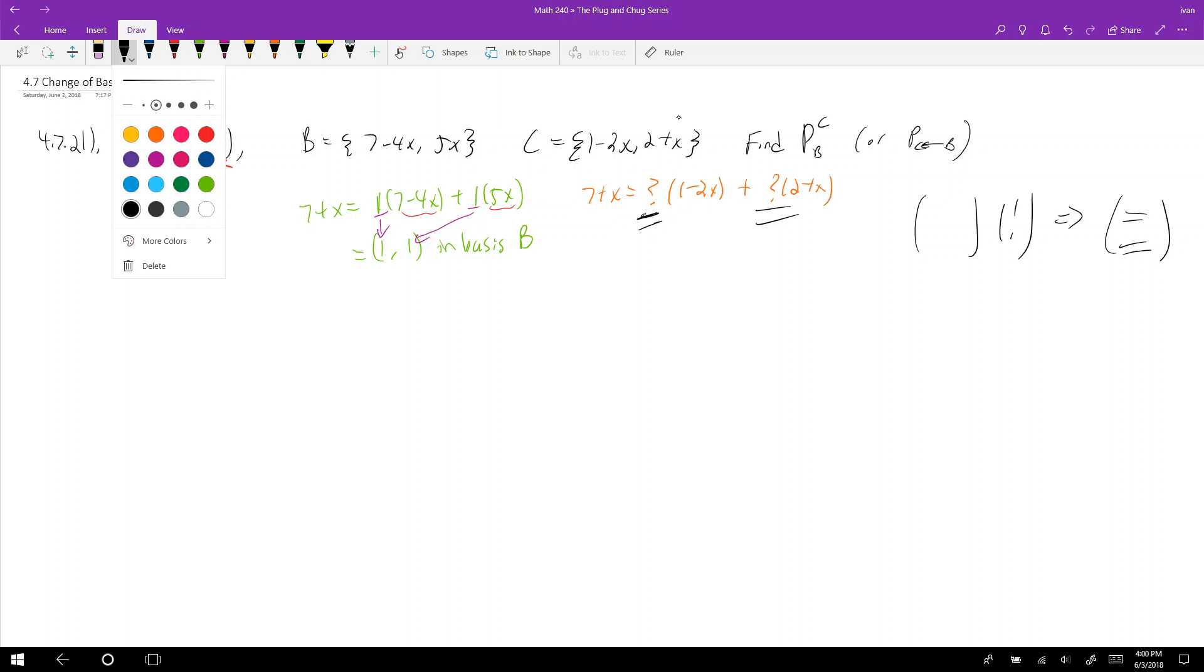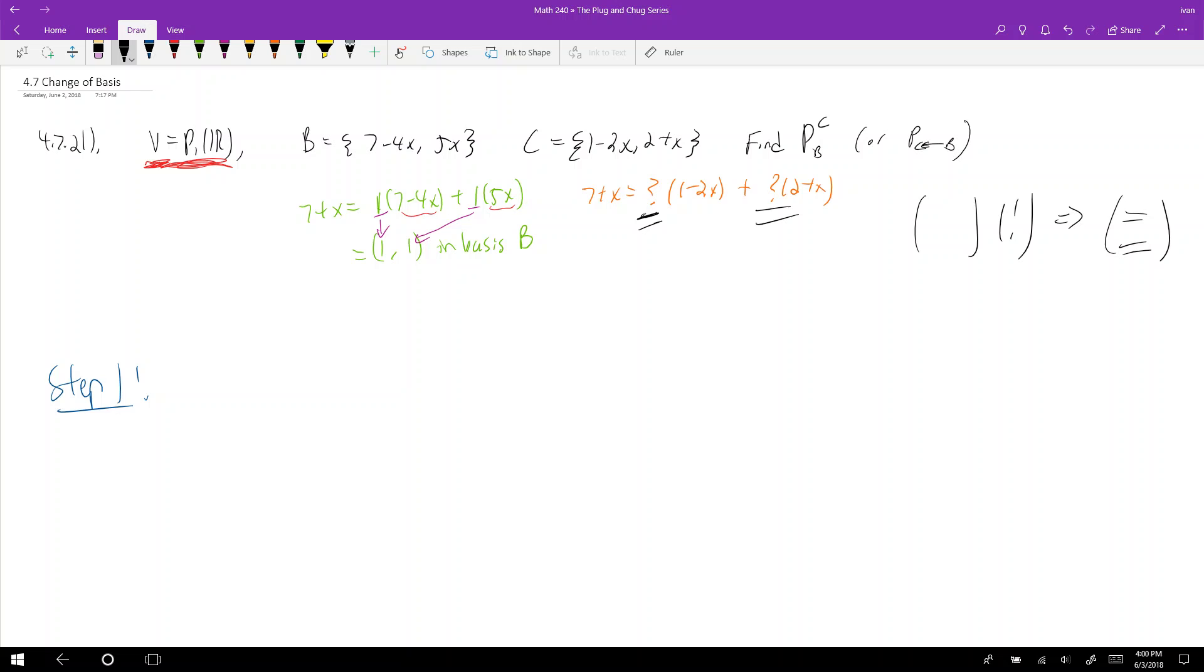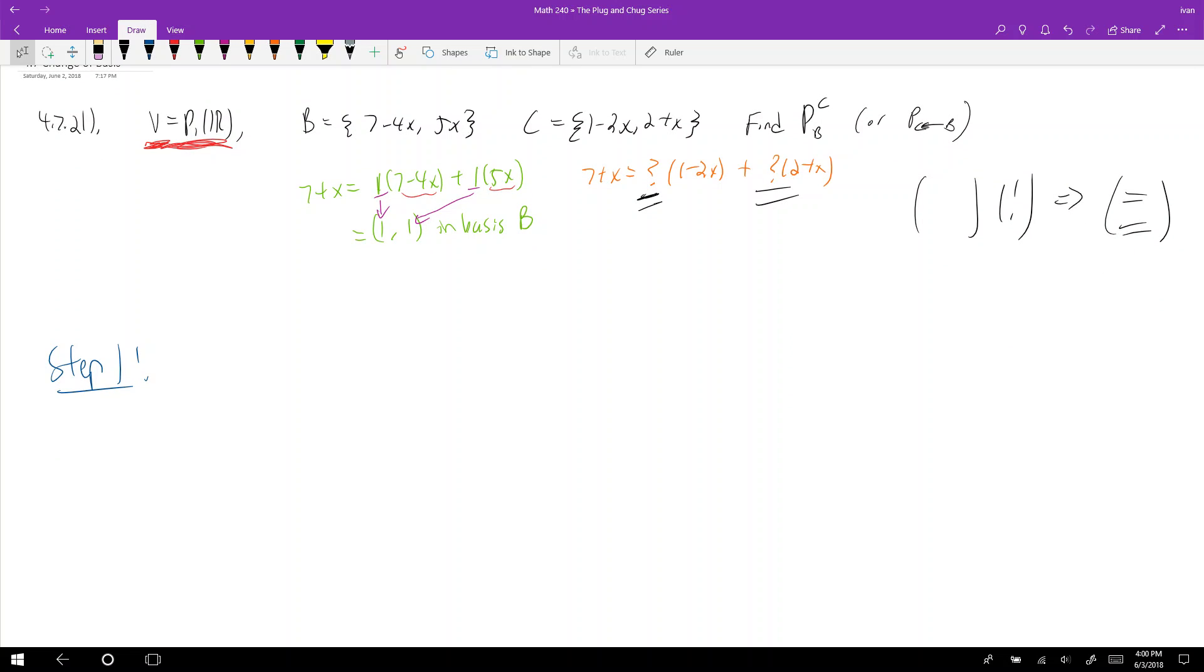They'll give me these guys right there. So that's what a change of basis matrix does. So now how do we find it? So we're going to do it the long way. So step 1 is to realize, I need to take each basis element here, and actually need to express it in terms of C.